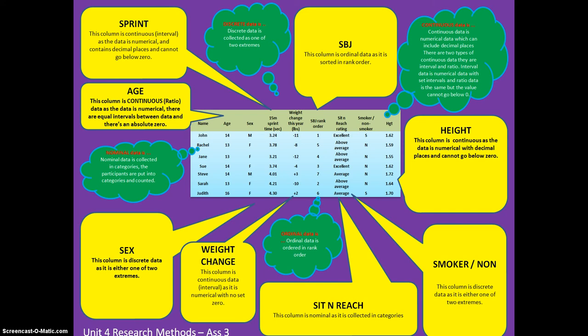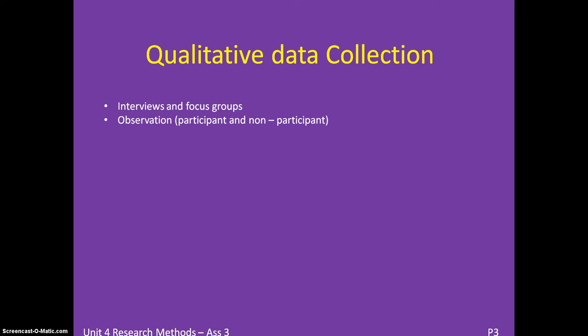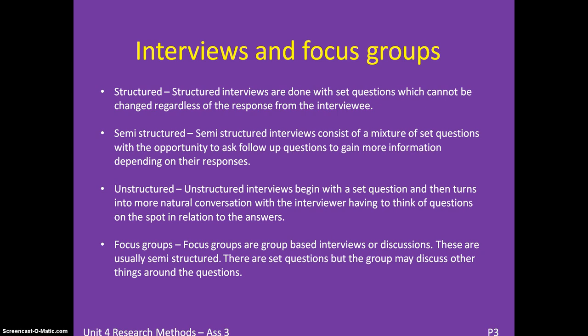Now we're going to go through qualitative data collection. There are two types: interviews and focus groups, and observation. There are three types of interviews: structured, semi-structured, and unstructured. Structured interviews are done with set questions determined before the interview, which cannot be changed regardless of the response from the interviewee.